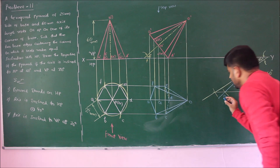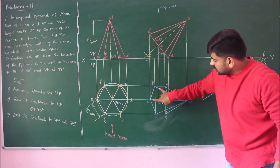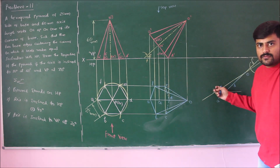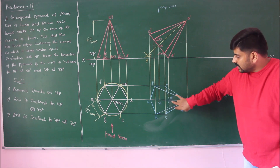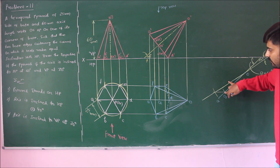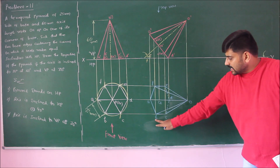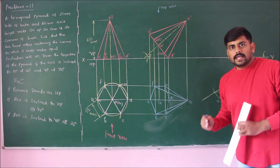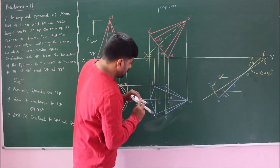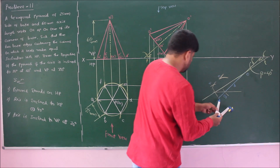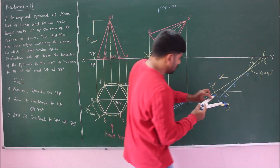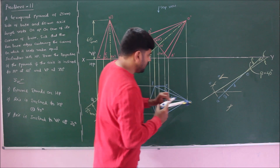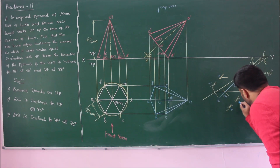Measure from o to a and also note point d, then transfer both. Transfer corners d and a. Using a compass, measure a to f and o1 to f, draw arcs and transfer corner f. Similarly measure o1 to e and d to e, fix arcs at o1 and transfer corner e. Repeat the same to get corners b and c.